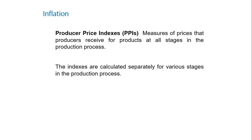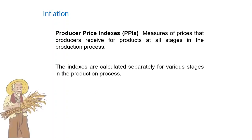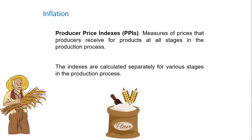Another way to calculate inflation is the producer price index. These indexes are measures of prices that producers receive for products at all stages in the production process. Many other countries use a similar variant called the wholesale price index, which measures and tracks the changes in the price of goods in the stages before the retail level. The indexes are calculated separately for various stages: crude materials, intermediate materials, and finished goods.